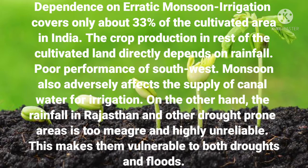The first major problem is dependence on erratic monsoon. Indian agriculture is based upon monsoonal conditions. Irrigation covers only about 33 percent of the cultivable land in India, so crop production in the rest of the cultivated land directly depends on rainfall. Spatio-temporal variation in rainfall causes fluctuation in the steady supply of water and makes crops vulnerable to both drought and flood.